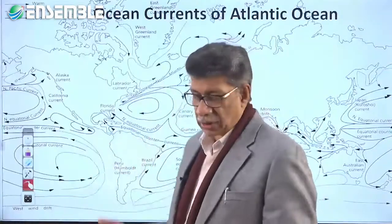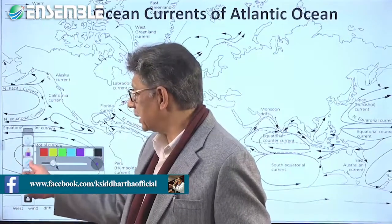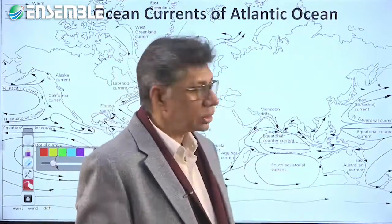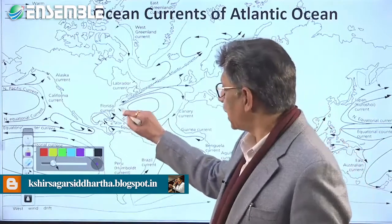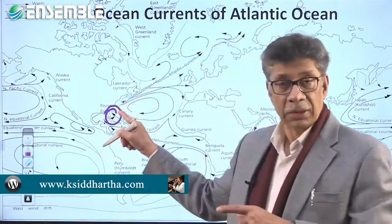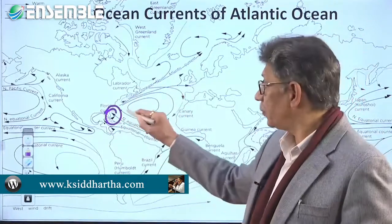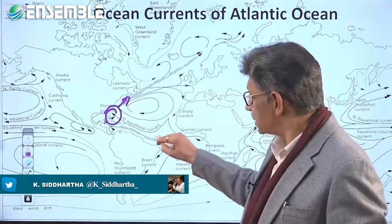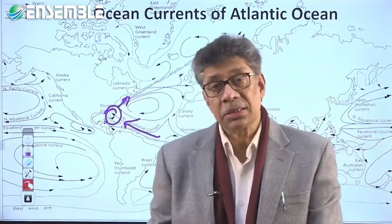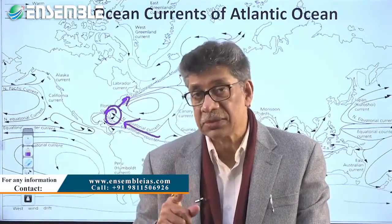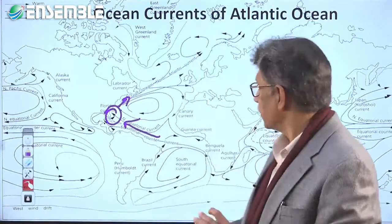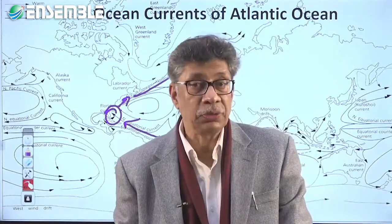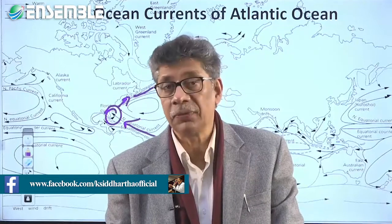The ocean currents begin from the part that enters the Gulf of Mexico. This current comes from the Florida Strait, joins the Antilles Current, and the combined current moves along the southeastern coast of the United States as the Florida Current up to Cape Hatteras. From Cape Hatteras up to the Grand Banks of Newfoundland, it is called the Gulf Stream.